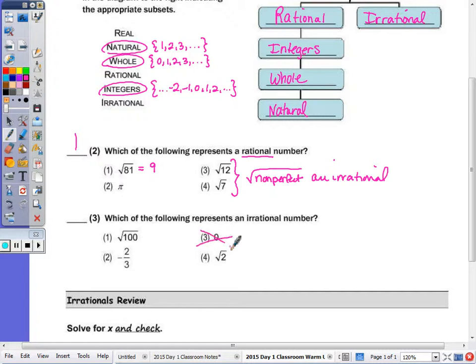Zero is obviously terminating. The square root of 100 is 10, which is terminating. And then two-thirds as a repeating decimal, or negative two-thirds is negative .66 repeating. So the square root again of a non-perfect square, number four, is irrational.